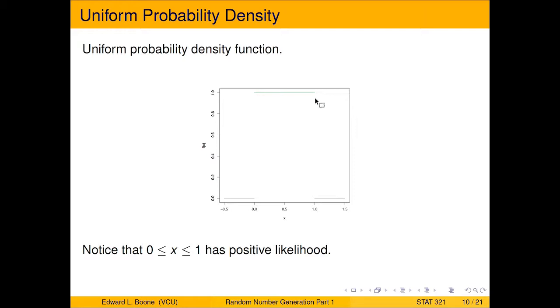And they're all the same likelihood, which means any value between zero and one is equally likely as any other one.